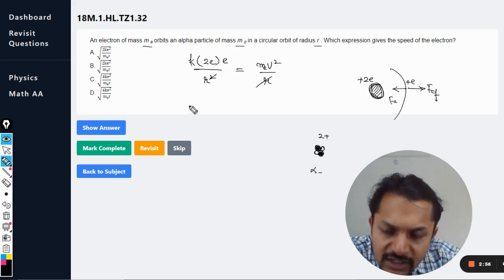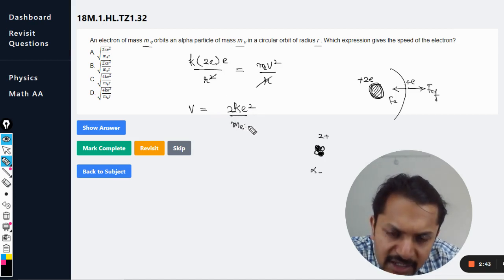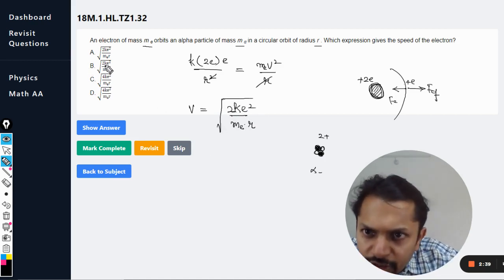Now we are going to compare these two. This radius and radius gets cancelled out. We want to find the expression for velocity, and I believe it is clearly written here. It would be 2ke square divided by me into r, square root. So it is 2ke square divided by me r, square root.